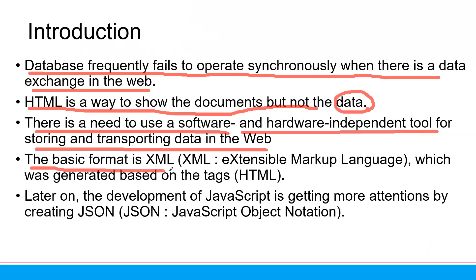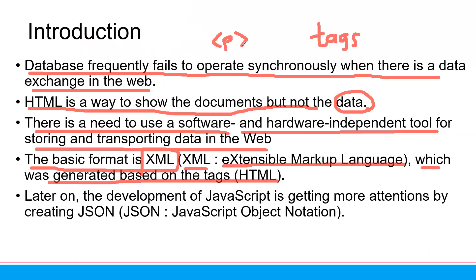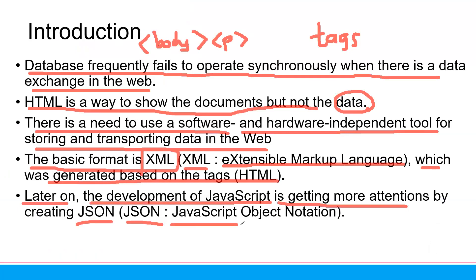The basic format is XML. Many people still use XML. XML means Extensible Markup Language, which was generated based on the tag syntax in HTML. If you know the tags in HTML — we use tags like 'p' to indicate paragraph, 'body' to indicate the body — XML will use similar tags but in a different way. Later on, the development of JavaScript got more attention by creating JSON. JSON means JavaScript Object Notation. That's why we learn JavaScript first before we go to JavaScript Object Notation.